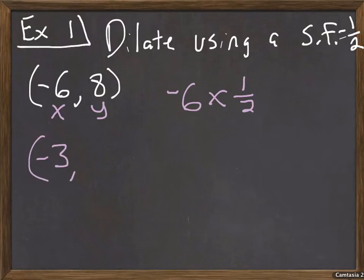I'll do the same thing with eight, my y coordinate. I'm going to write y coordinate here. Y equals eight times one half my scale factor, and I end up with four.